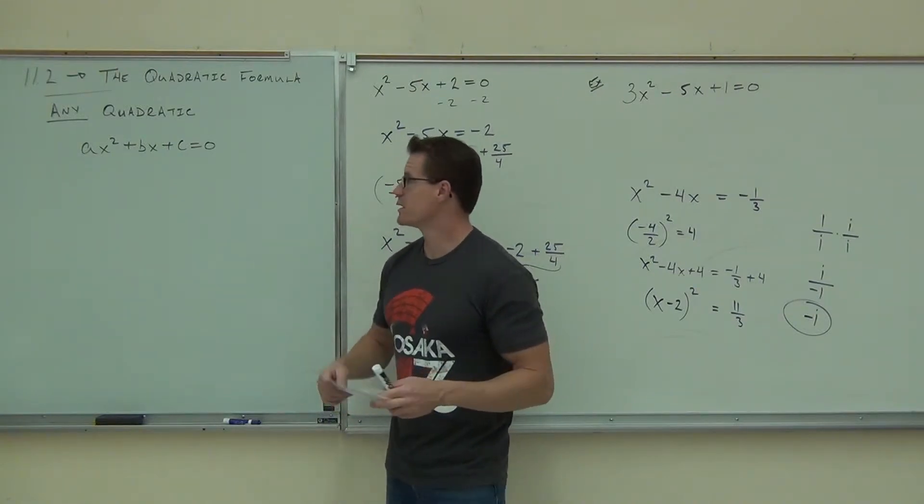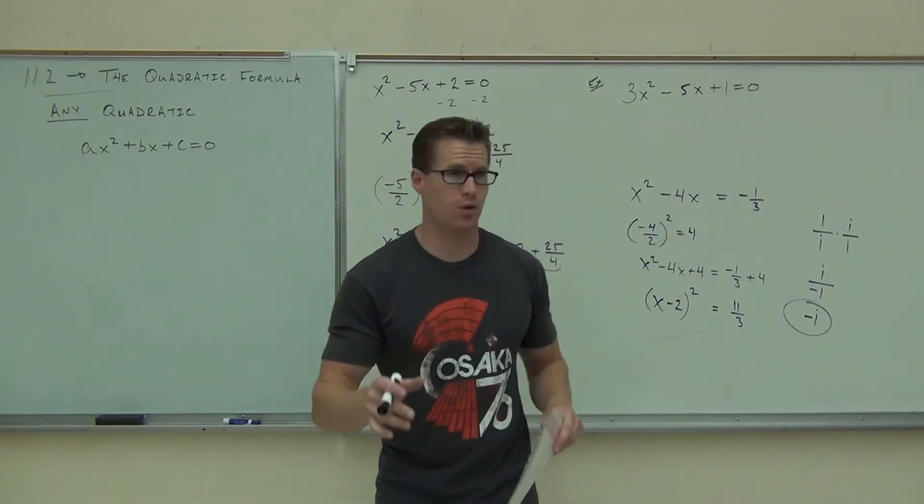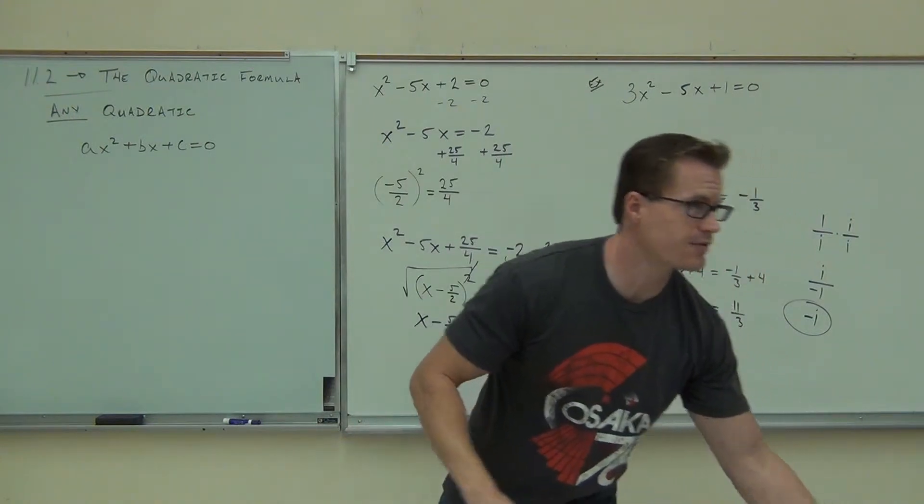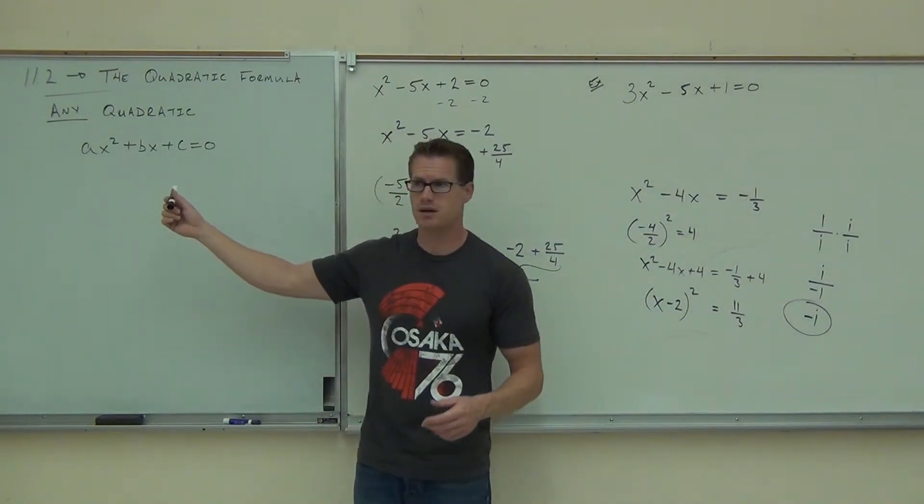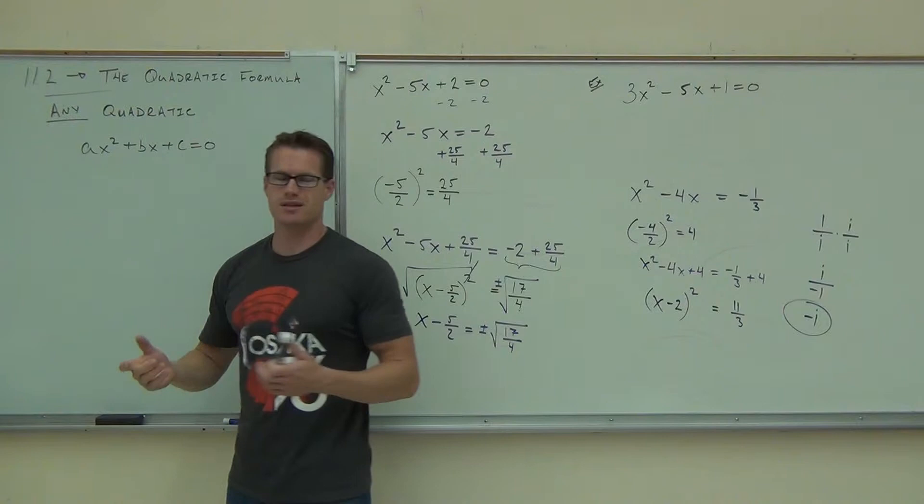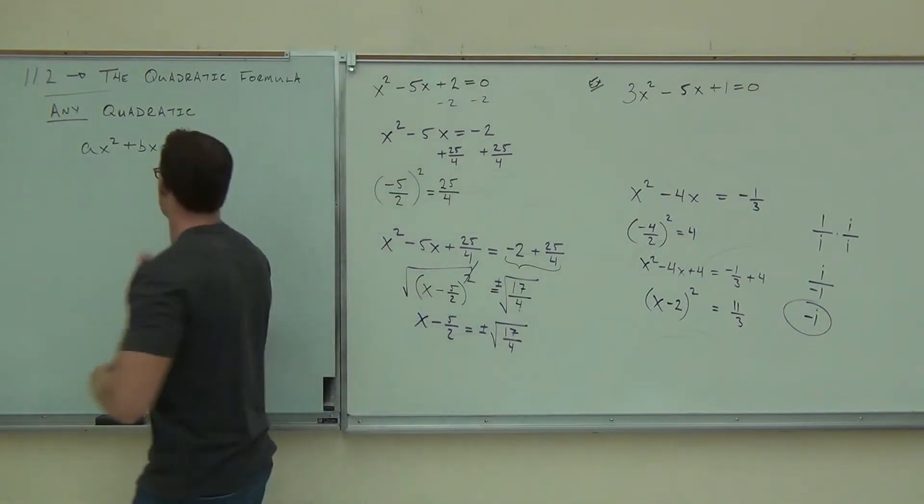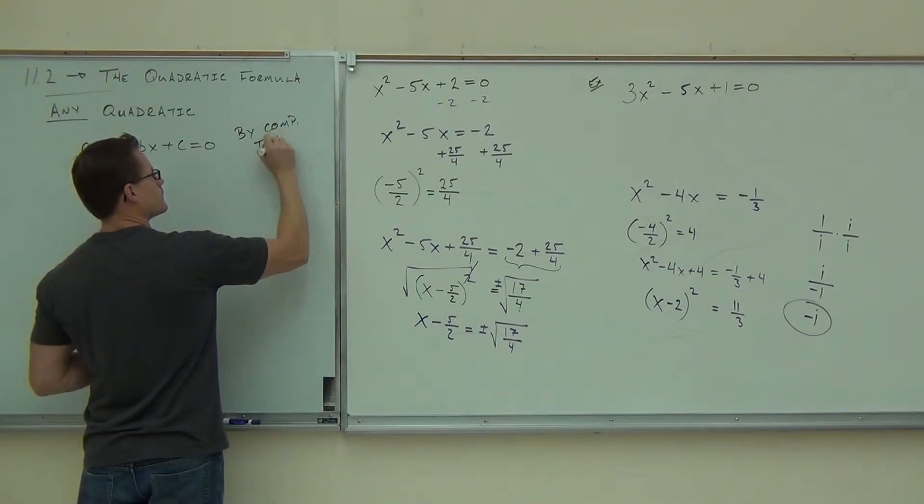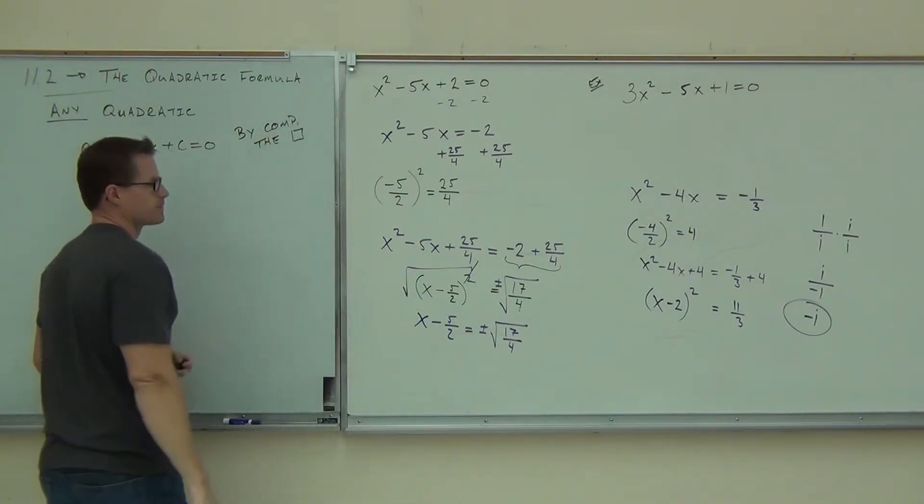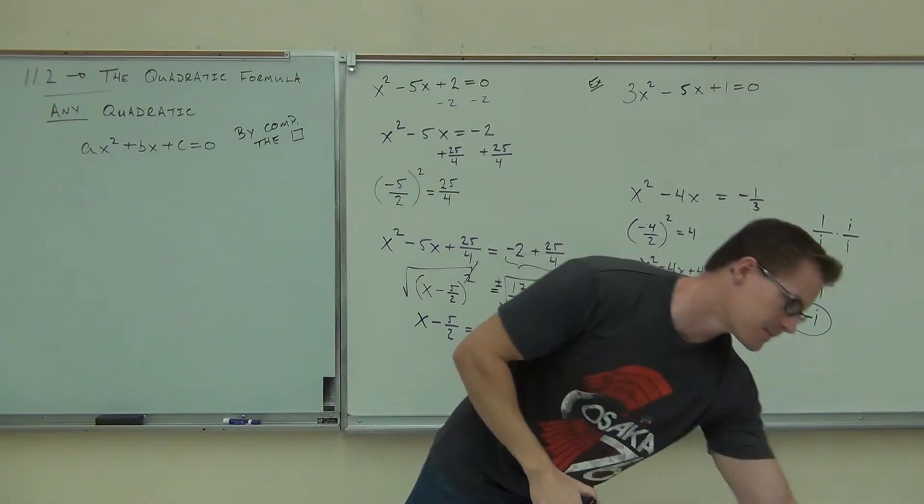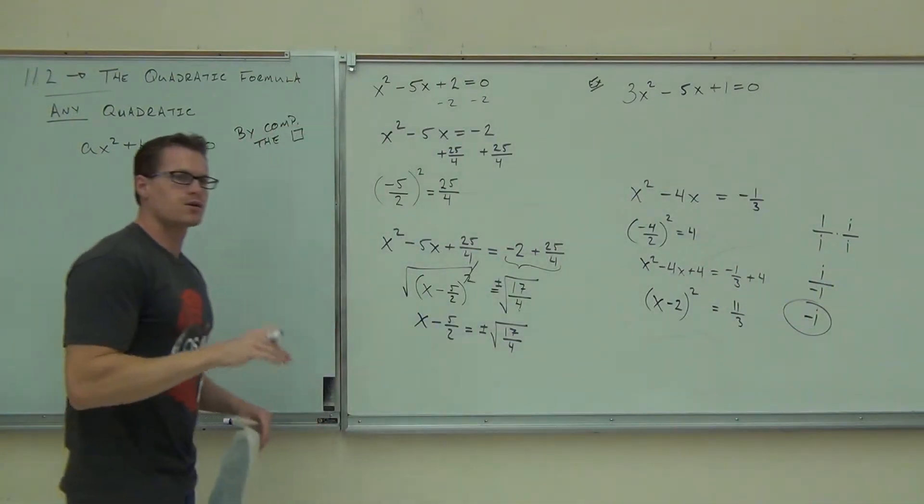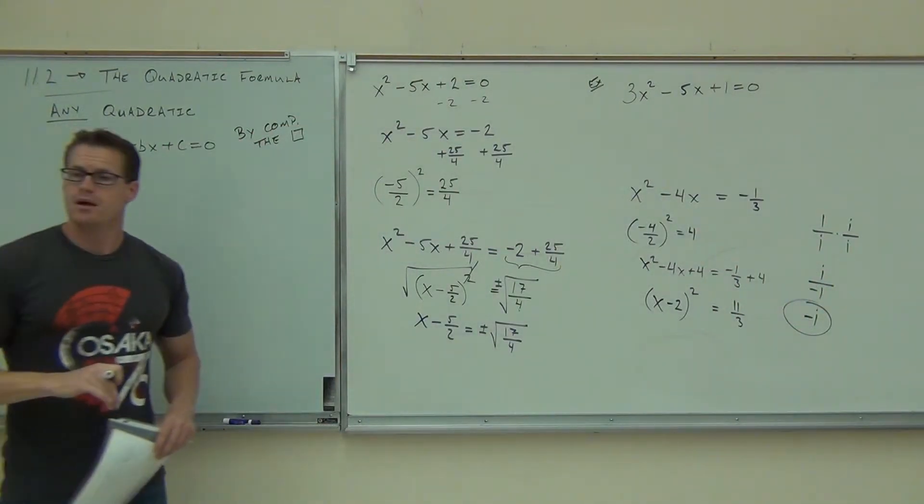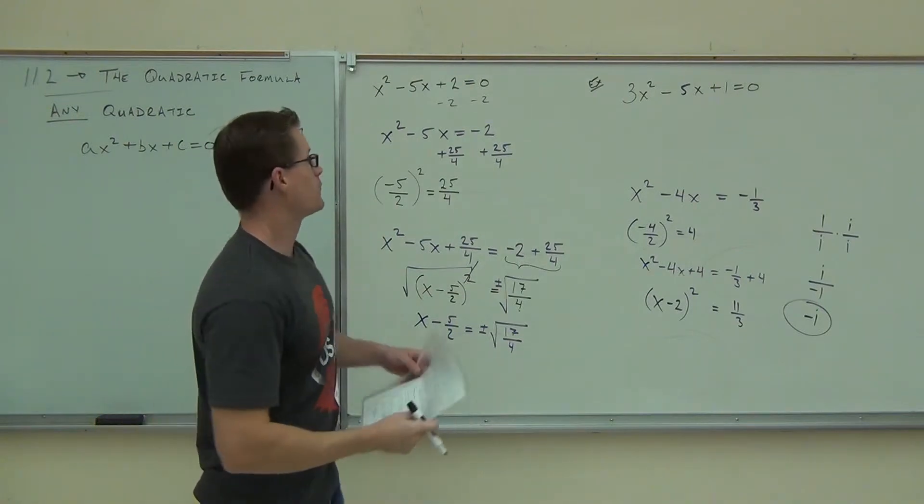What we're doing here is we're going to solve this in general by completing the square. Notice, I haven't told you what a is, what b is, and what c is. I'm going to solve it anyway. So this is by completing the square. We're going to follow the steps to completing the square right now.